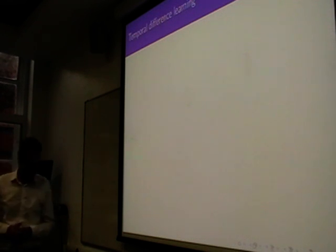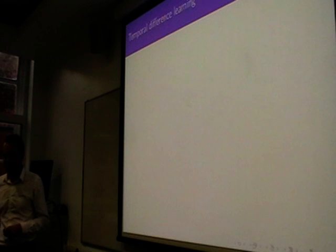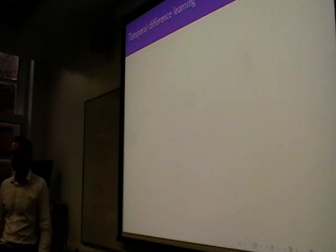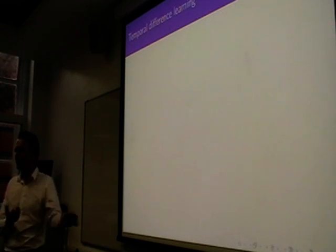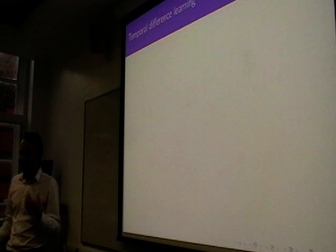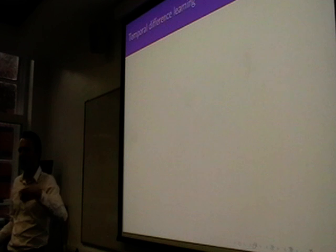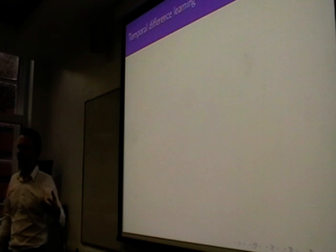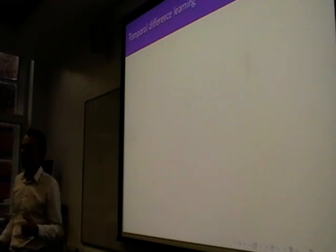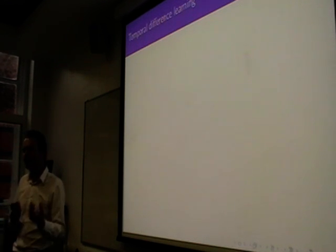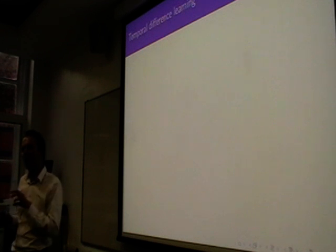One algorithm is temporal difference learning. The idea is actually very simple. You remember the V function — that's the expected reward. You have a model in your system: what is the expected reward in this state of the world? What do I expect in the future? How good is this? Then what happens is you experience what comes next, and you compare what you expected with what actually happened. You look at the difference and then update your model based on that difference.